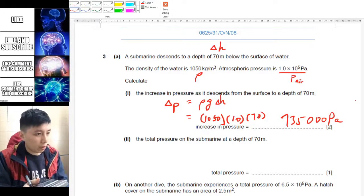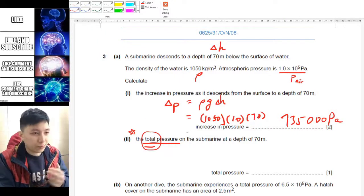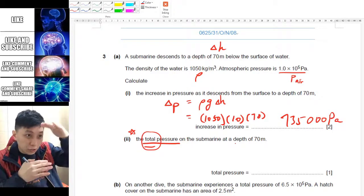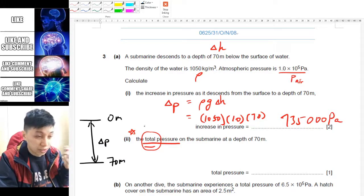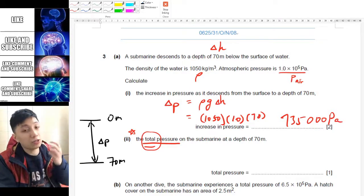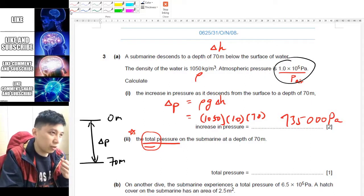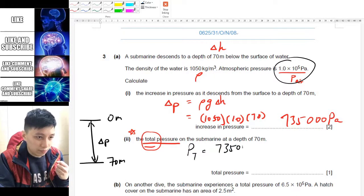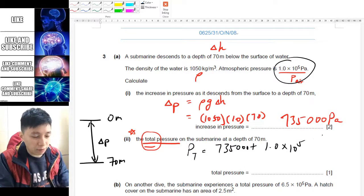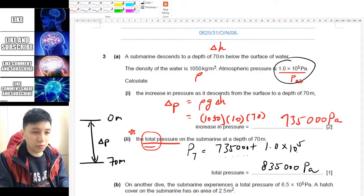Part 3 is asking you total pressure. Okay, so be very careful whether or not the question is asking you total or the difference, because for this one we have already found out the pressure difference from the surface of water to 70 meters. So if you have to visualize it, say this is 0 meter, this is 70 meter. The one that we found out from part 1, 735000, is the delta P. However, at 0 meter there's also pressure due to the air itself, so that's why they have given you the pressure for air. And the answer you only see there's only one mark, that's because simply what you have to do is to get the P total equal to the one that you found plus the atmospheric pressure, so 1.0 times 10 to the power of 5. So the answer I believe should be 835000 pascals. Don't forget the unit.